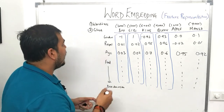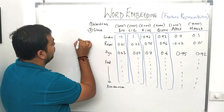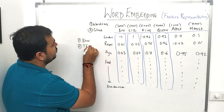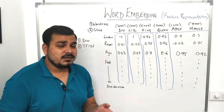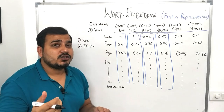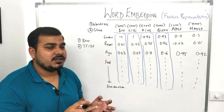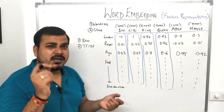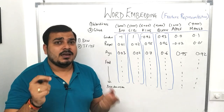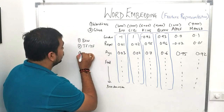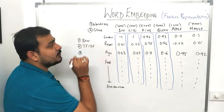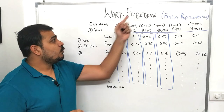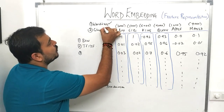Going back, I've already taught you about bag of words and TF-IDF. In bag of words you won't get much semantic information; in TF-IDF you get a bit of semantic information. The third technique, to overcome these disadvantages, is something called word embedding techniques.